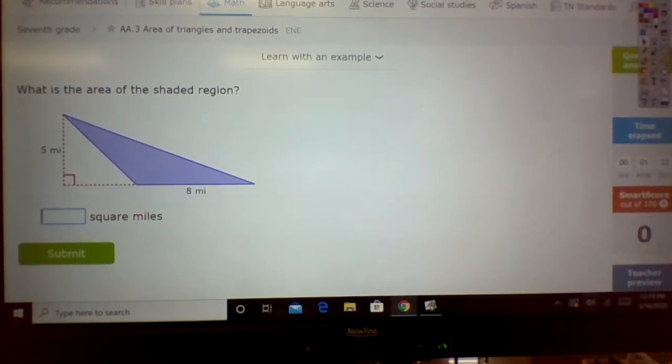So what this is is a triangle, and remember the formula for triangle is A equals one-half times base times height, or A equals base times height divided by 2.